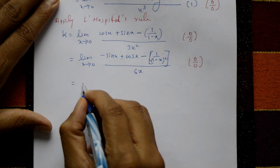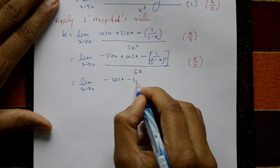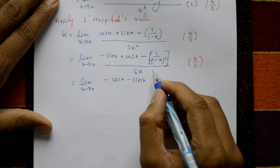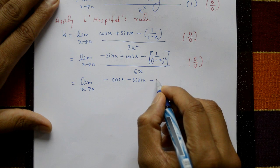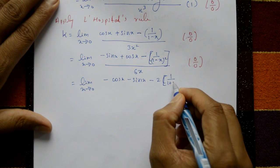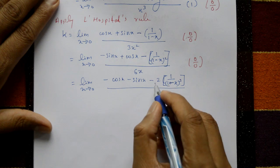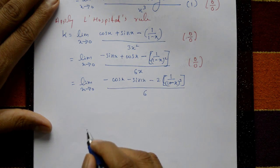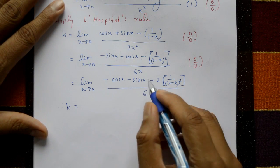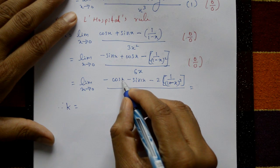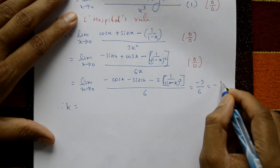Third application of L'Hôpital's rule: differentiate to get -cosx - sinx, and the derivative of -1/(1-x)² gives -2/(1-x)³. The denominator differentiates to 6. Now substitute x = 0: numerator gives -1 - 0 - 2/1 = -3, divided by 6, giving k = -1/2. This is the required answer.